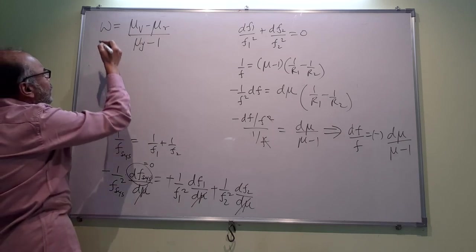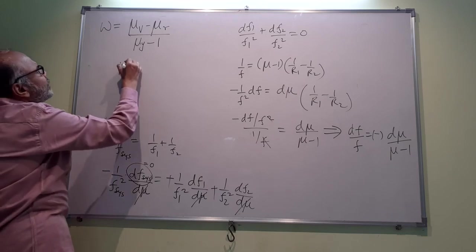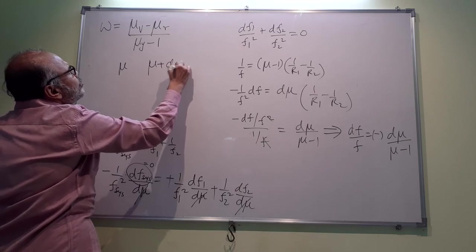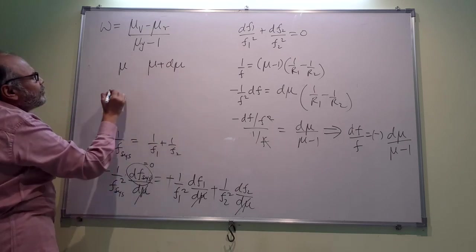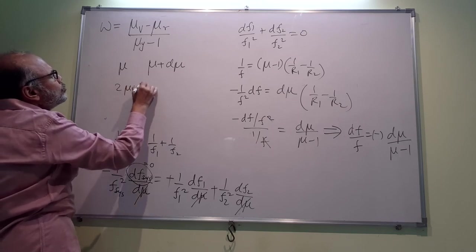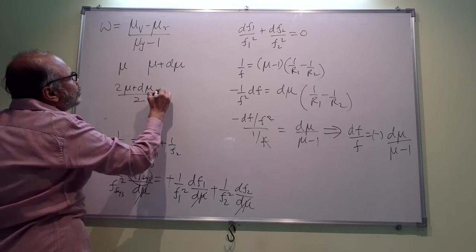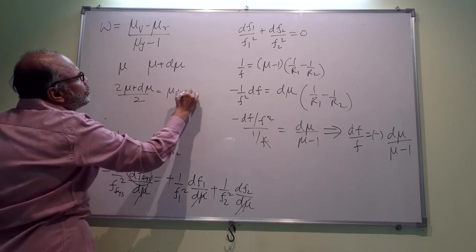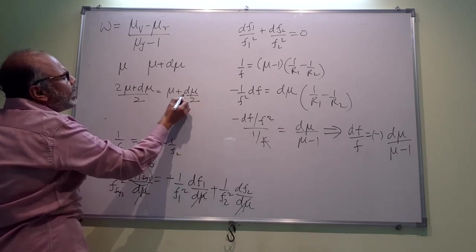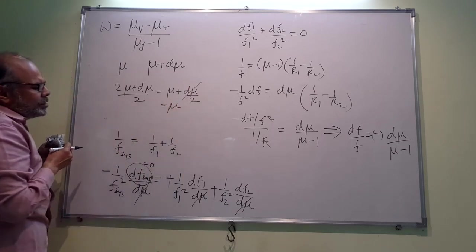So now we can write this ω in terms of differentials. Supposing the two refractive indices are μ and μ + dμ. What is the average of this? Let us add this and divide by 2, so you will get (2μ + dμ)/2, that will be μ + dμ/2. dμ, since it tends to 0, when you add a small quantity to μ will be negligible. So the mean refractive index is μ.